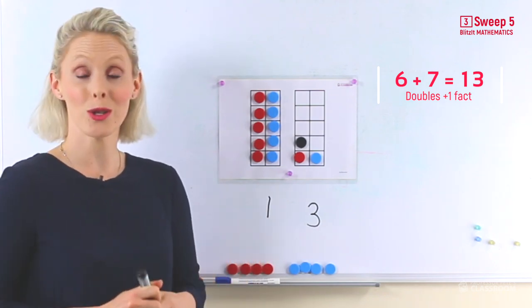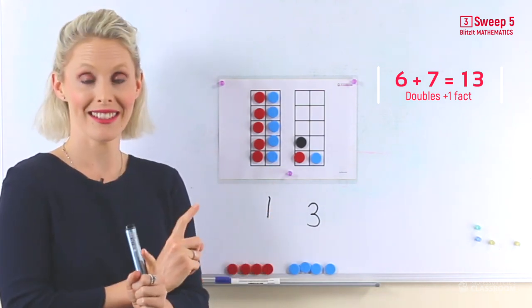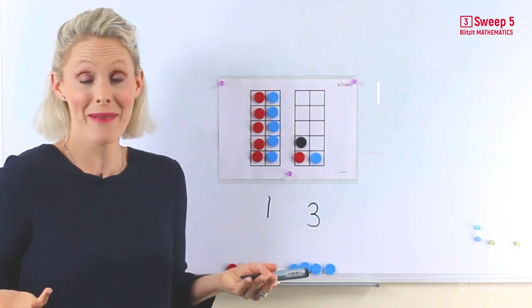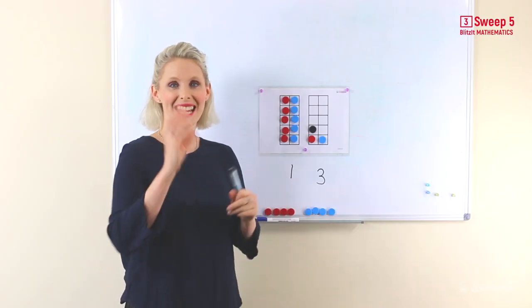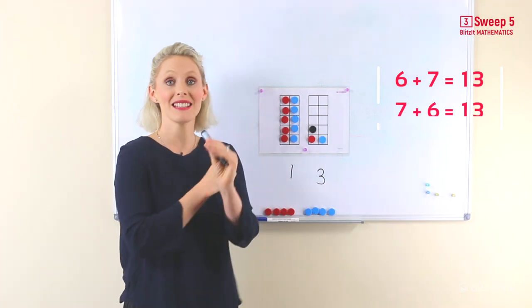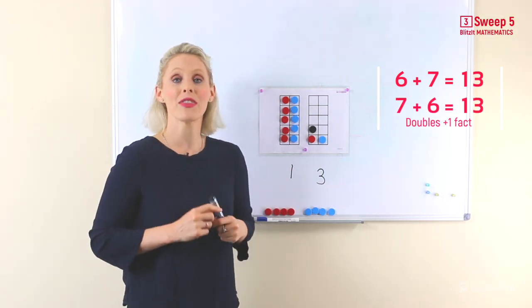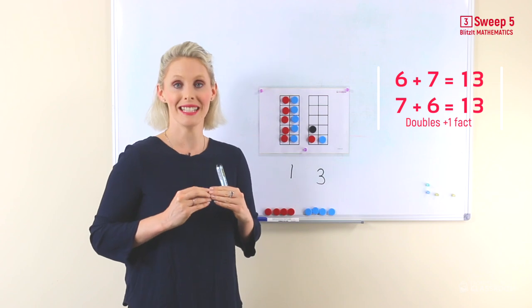That's right. Now you can also use your turnaround, and it equals the same answer. So six and seven is the same as seven and six. You just need to look at the smaller number, double it, add one, and you've got it.